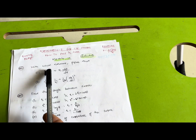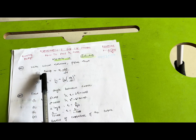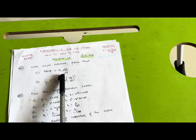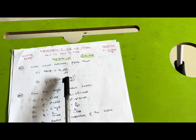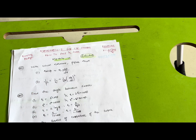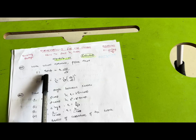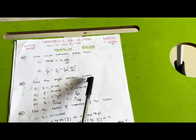Let us discuss Module 1, which is Calculus. The seven-mark question you have to go through is: with usual notations, show that tan φ = r dθ/dr, and 1/p² = 1/r² + (1/r⁴)(dr/dθ)². This is a super important question asked most of the time irrespective of the scheme. If you go through previous year question papers of 18 scheme, 21 scheme, and 22 scheme, you will find this question in each and every paper.